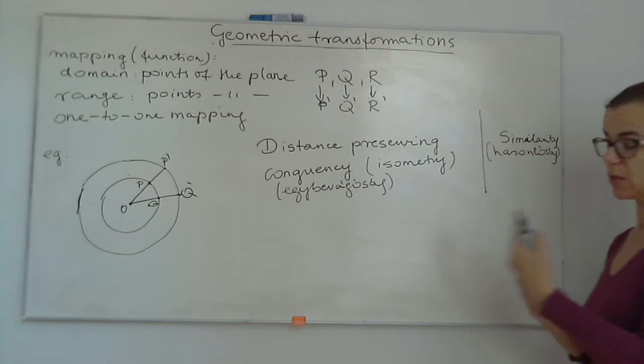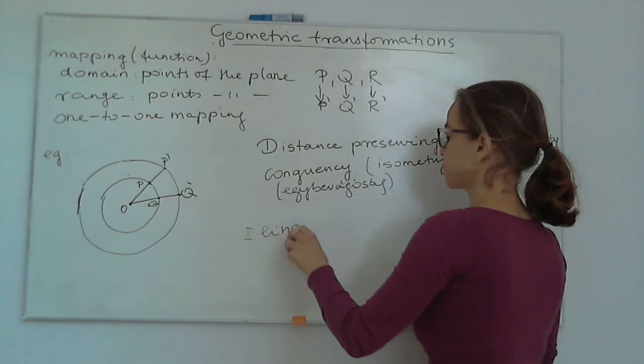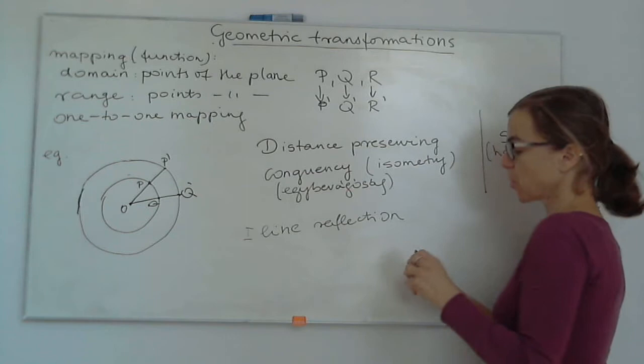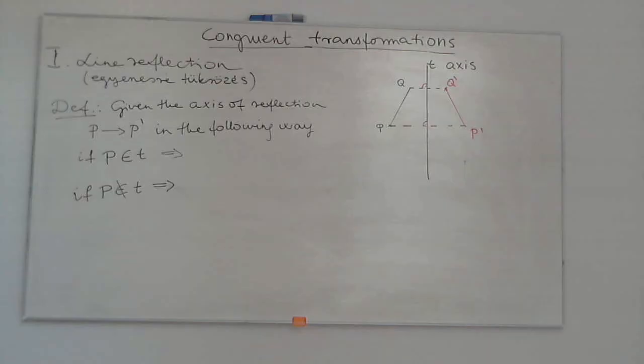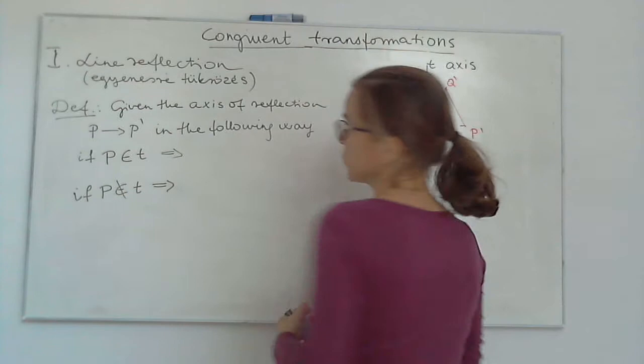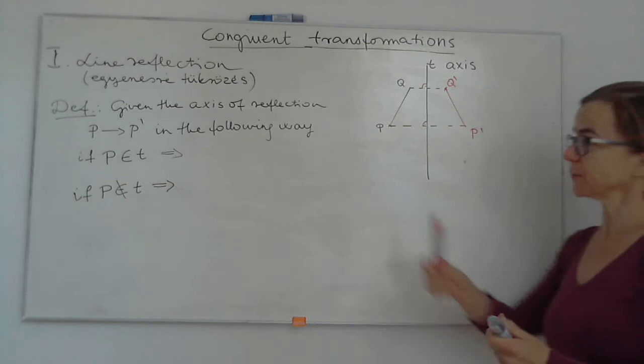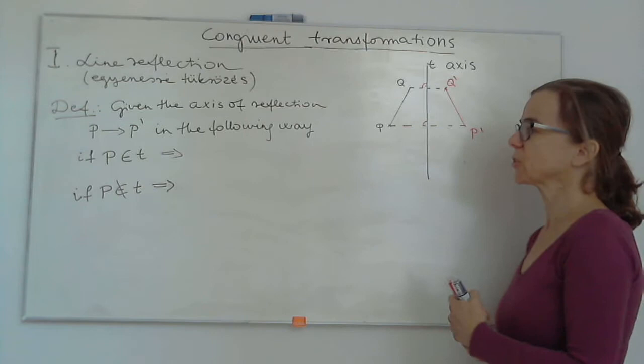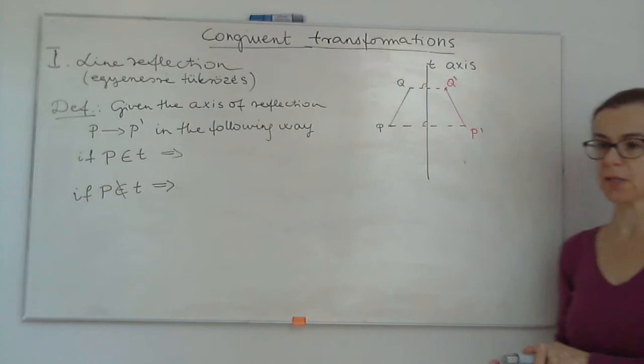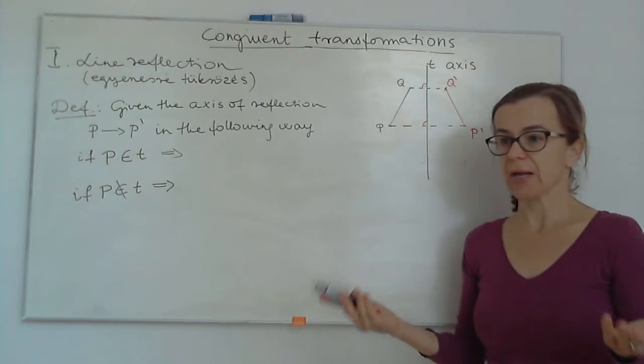The first type of distance-preserving transformations, the first example, is line reflection. We are going to discuss the properties and the definition of this particular type of transformation. Let's see how we define line reflection, and what needs to be given in order to find the image of a given segment, figure, or triangle on the plane.